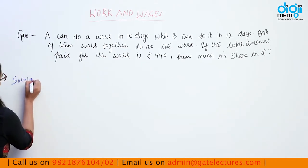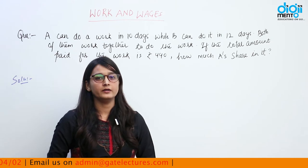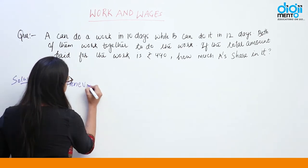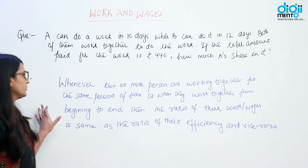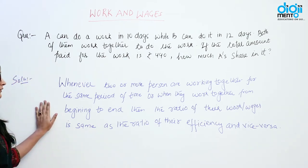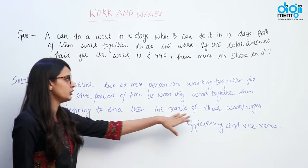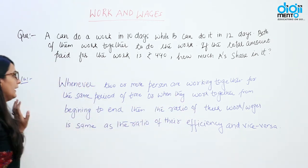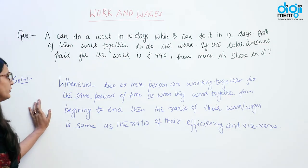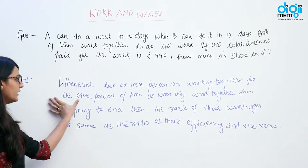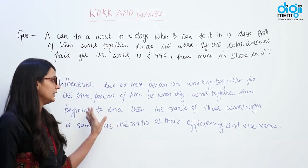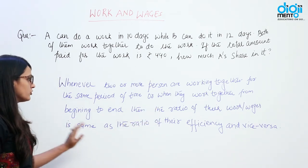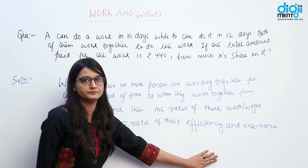Before starting this question, we must know one point: whenever two or more persons are working together for the same period of time, or when they work together from beginning to end, then the ratio of their wages is the same as the ratio of their efficiency, and vice versa.